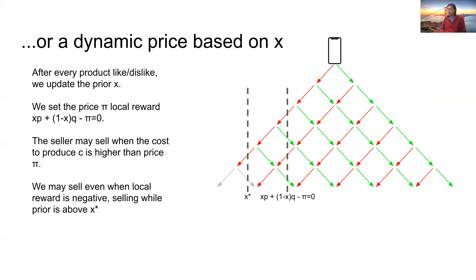When your prior X is within the range of X star and local reward being zero, you sell at a loss. But the intuition of why the expected revenue is still positive is because the probability of the product being good and the desire to gain more information outweighs the loss in the short term.